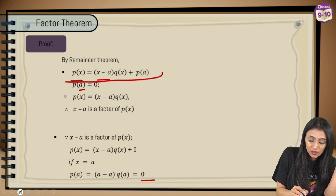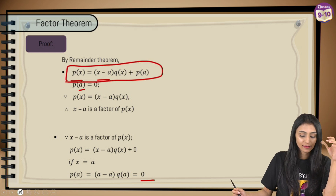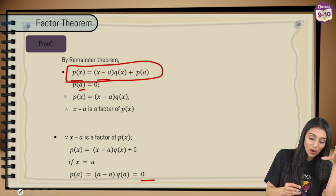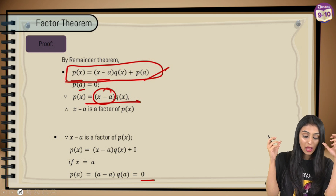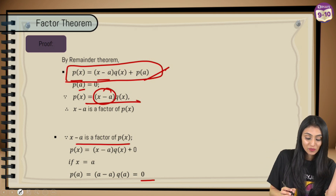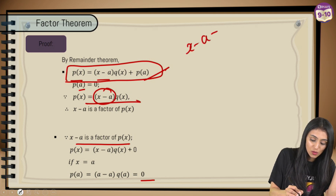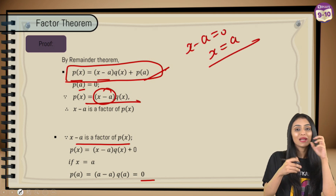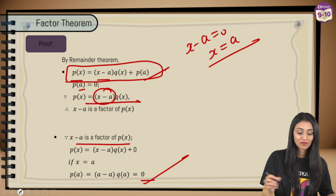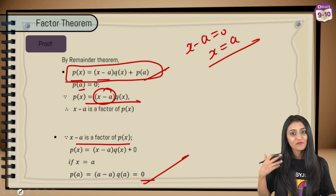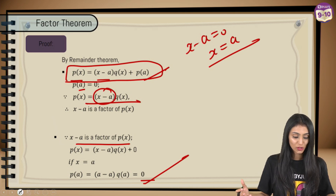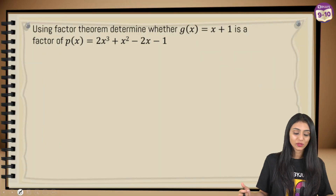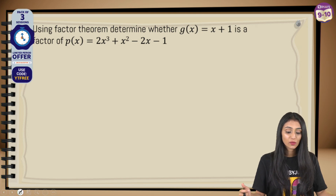In a nutshell, the remainder theorem tells us that if the remainder is 0, then the divisor is a factor of the dividend. If x − a is a factor, setting x = a gives p(a) = (a − a)·q(a) = 0. So a is the zero of the polynomial — that's what the factor theorem states.